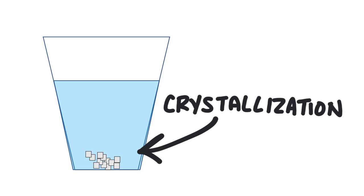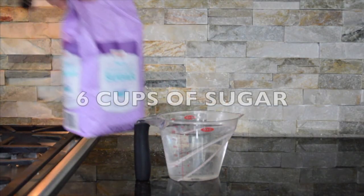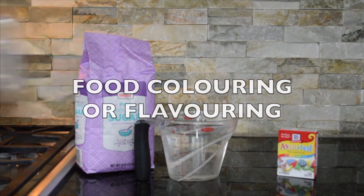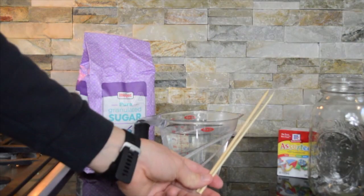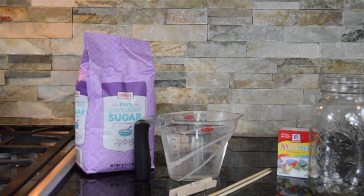So let's use these principles to make some rock candy. First let's gather our materials. We'll need two cups of water, six cups of sugar, food coloring or flavoring if you want, a large jar, wooden skewers, and a clip to hold the skewer in the jar.